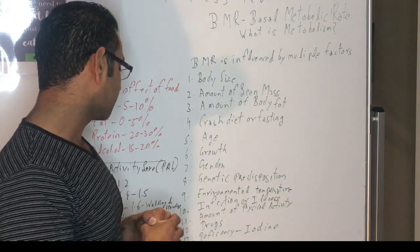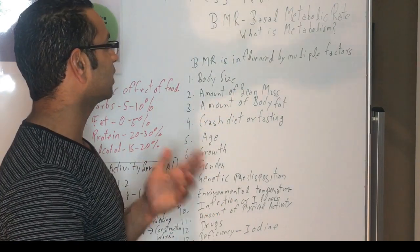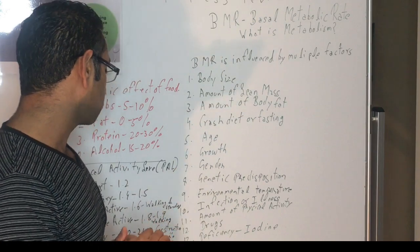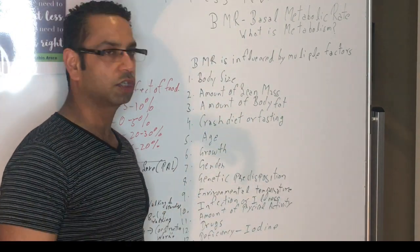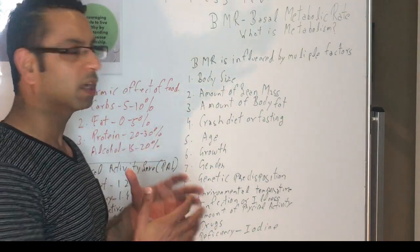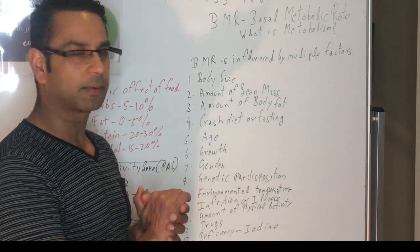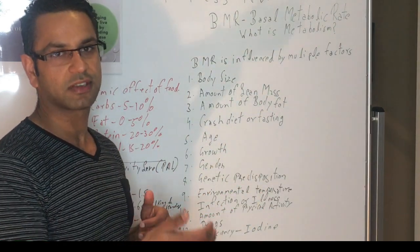The twelfth one is drugs. Some drugs, depending, can decrease or increase the basal metabolic rate. The thirteenth one is deficiency, and that's due to iodine. For example, or there could be other micronutrients as well, but here I'm only taking the example of iodine. So if you are deficient in iodine...